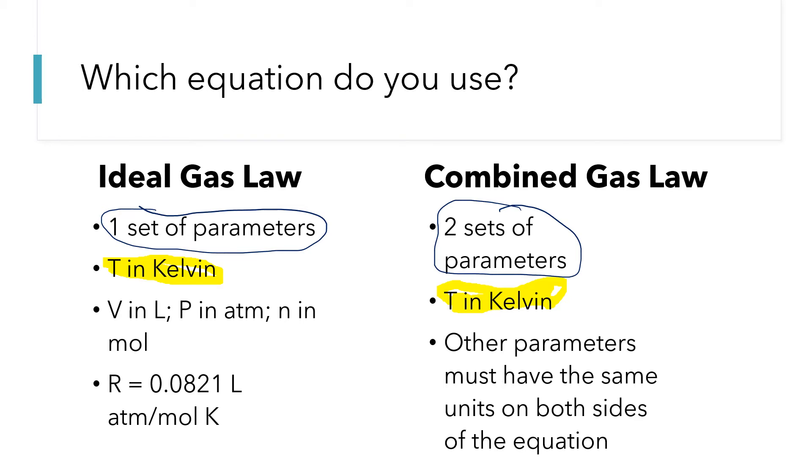In the ideal gas law, because we're using a particular value for R, the units for pressure and volume and N are fixed. We must use liters, atmospheres, and moles. But when we're doing the combined gas law, pressure and volume can be in any units as long as we're using the same units on both sides of the equation.